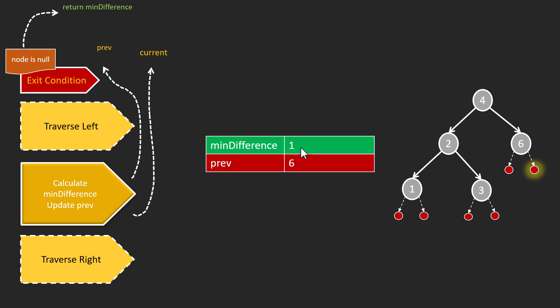In-order traversal can also be done iteratively. That's a homework for you — you can watch our video on iterative preorder, in-order, and postorder traversal to learn how to solve this iteratively. The steps remain the same while processing the current node: calculate the minimum difference and update the previous. Only the way we traverse changes for iterative versus recursive.